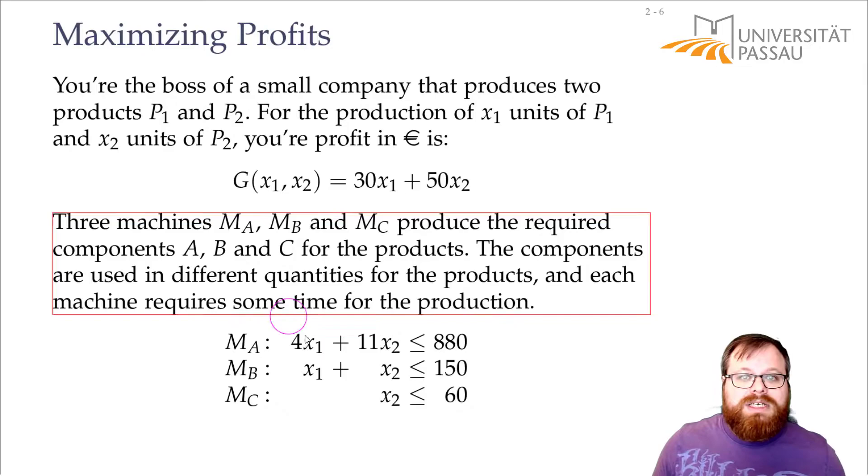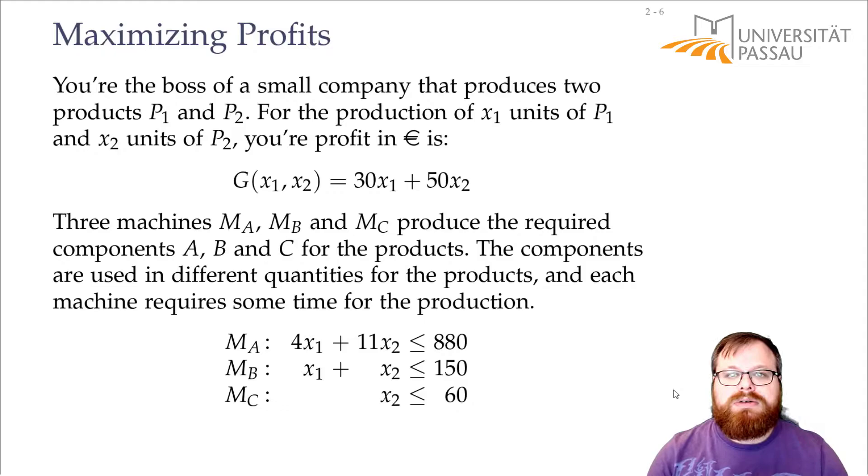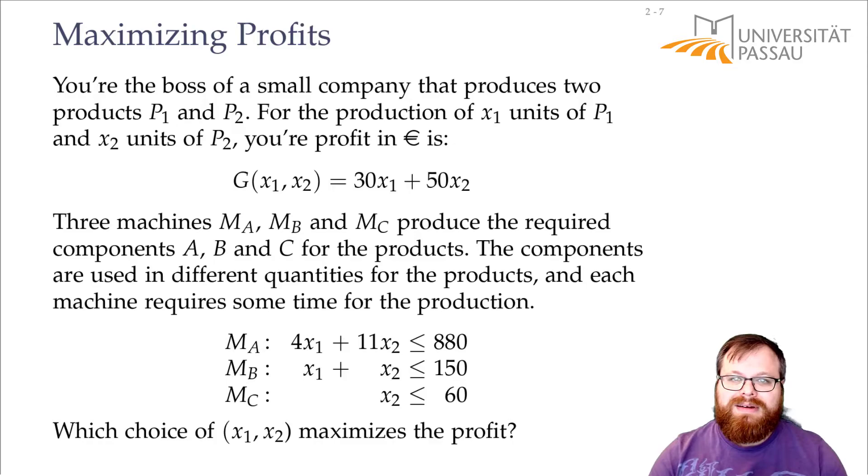Or we can create 880 of component A. That means 4 times the number of keyboards plus 11 times the number of mice can be at most 880 during one day. And of course, now the question is, how do we want to choose x1 and x2 to maximize the profit? So how many keyboards and how many mice do we want to produce?